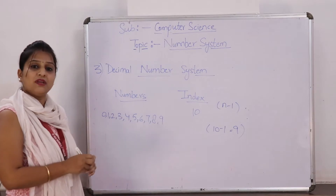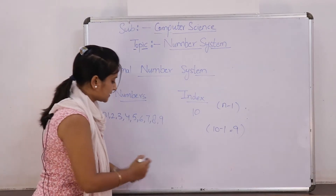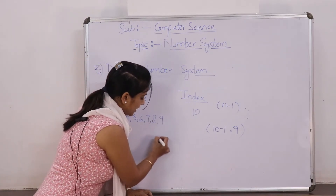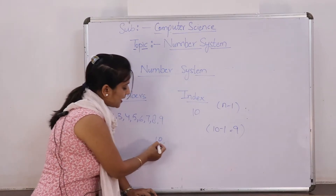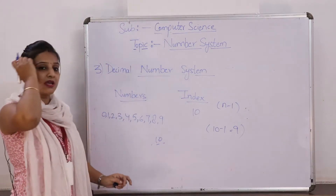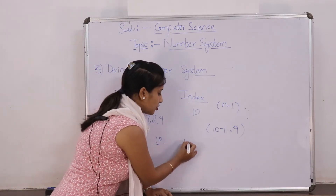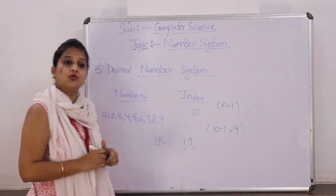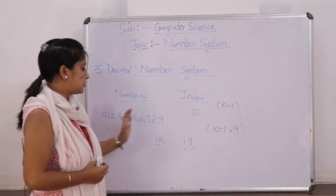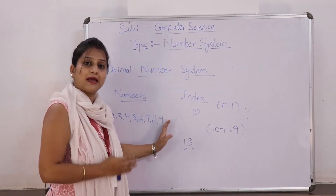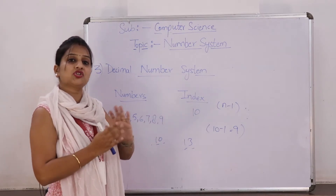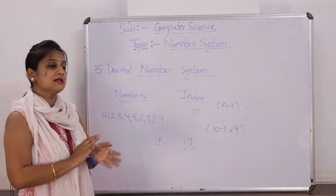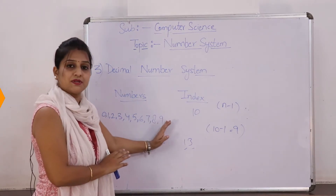After 9, we have combinations of numbers. For example, 10 is a combination of 1 and 0. Any other number like 30 is a combination of 3 and 0. So we only have single digits from 0 to 9, and after that we have combinations of those numbers — we don't have any numbers except these.